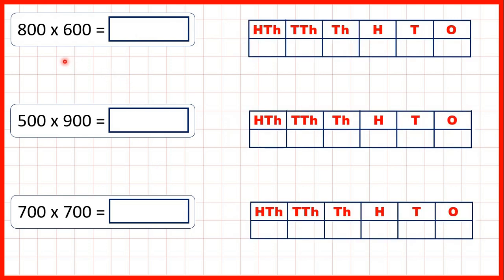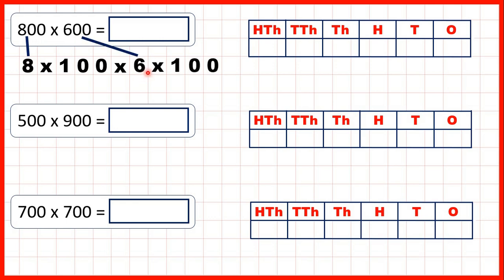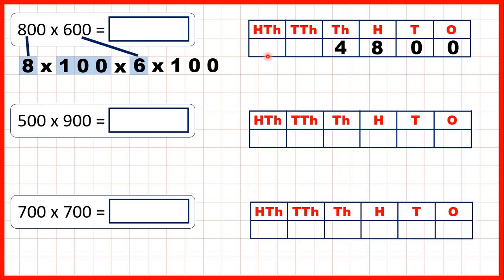To see why this method works, remember 800 is 8 times 100, and we're multiplying by 600, which is 6 times 100. With multiplication, order doesn't matter, so we can do 8 times 6 first to get 48. When we multiply by 100, digits move two place values to the left and we write two zeros on the end. But now we need to multiply by 100 again, so we move the digits two more place values to the left and write two more zeros. That's why our answer is 480,000 — 8 times 6 is 48, and because we multiplied by 100 twice, we need four zeros on the end.